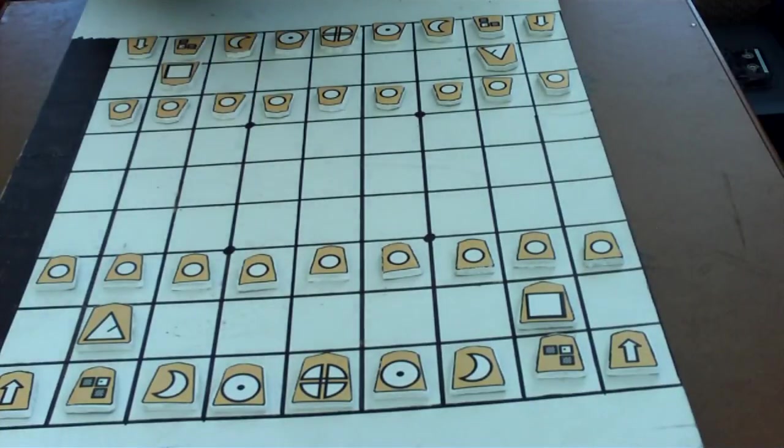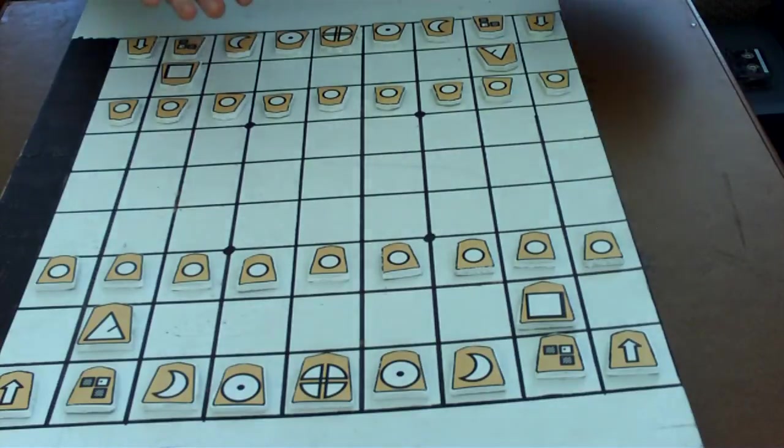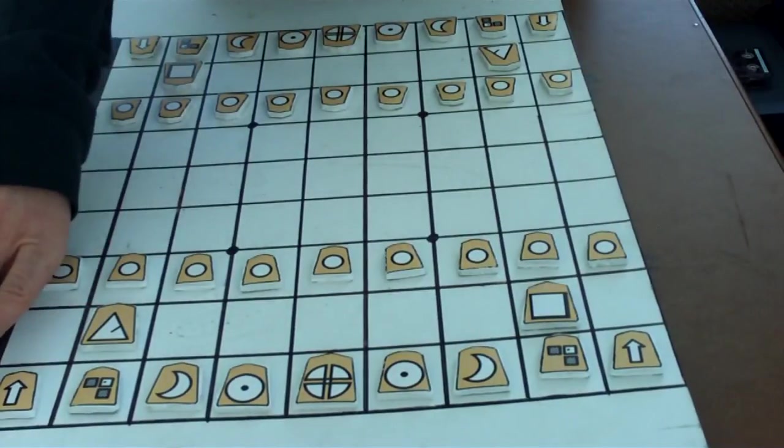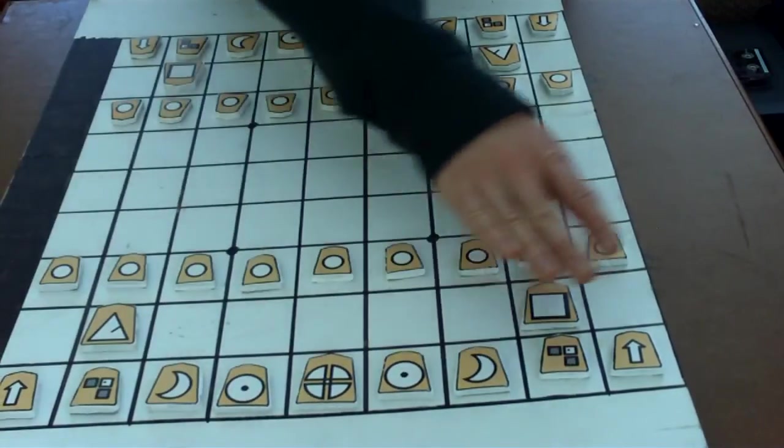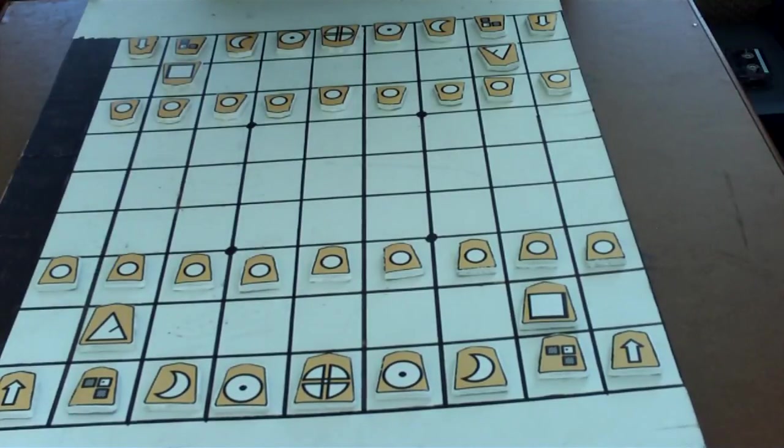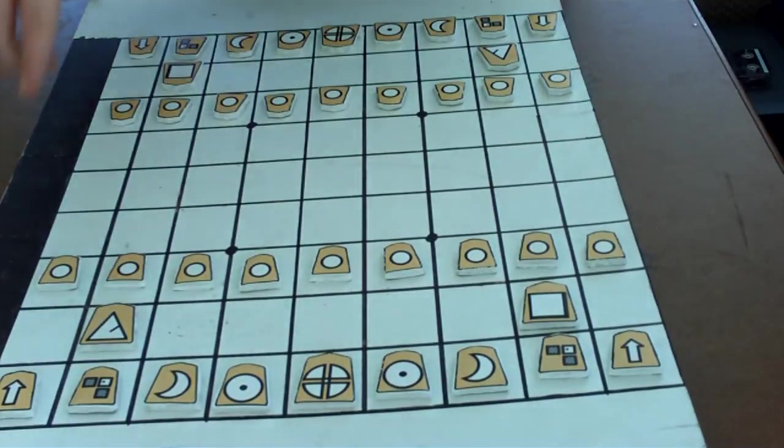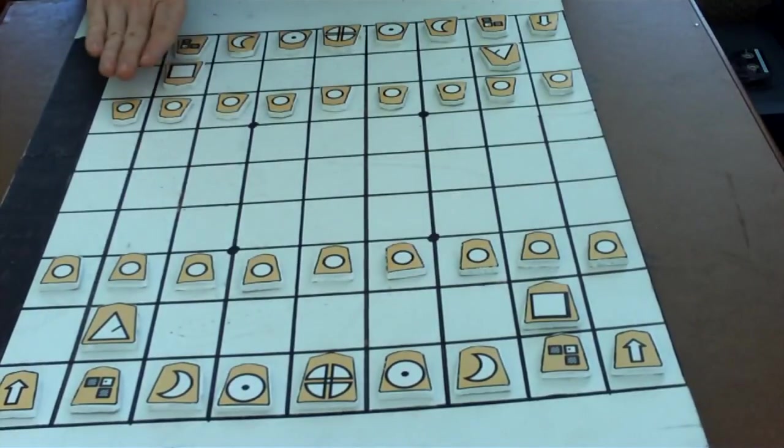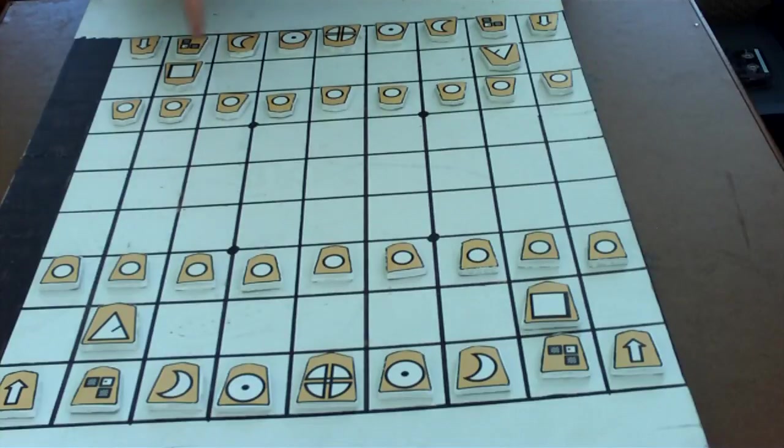The three ranks at each end of the board are the promotion zones for the other player. For the pieces on this side, when they reach the three ranks here, or they move from these three ranks, or they move within these three ranks, they can promote. And likewise, when these pieces move into this area, or move from this area, or move within this area, they can promote.